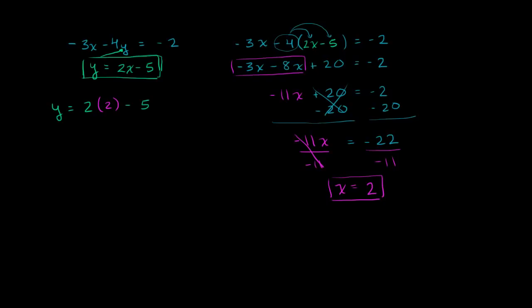So y equals 2 times 2, which is 4, minus 5, so y equals negative 1. You can verify this works in the top equation: if y equals negative 1 and x equals 2, the top equation becomes negative 3 times 2 (negative 6) minus 4 times negative 1 (plus 4). Negative 6 plus 4 is indeed negative 2, so it satisfies both equations.